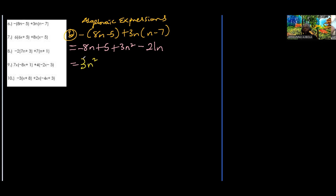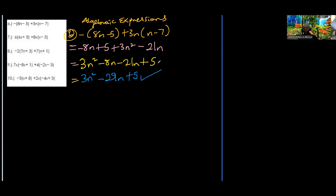Bringing terms together: 3n squared, then negative 8n minus 21n gives negative 29n, plus 5. So we write 3n squared minus 29n plus 5, and this is our answer.